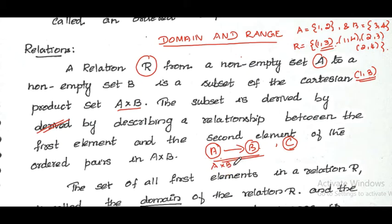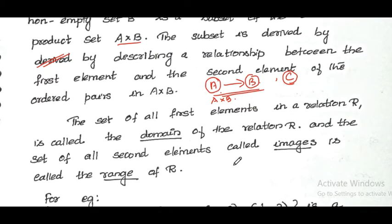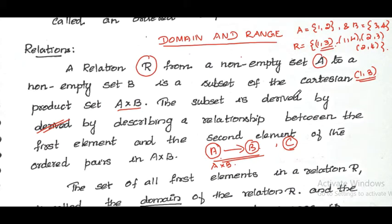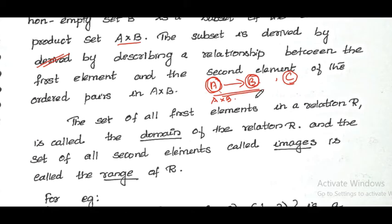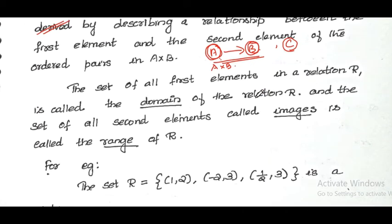The set of all first elements in a relation is called the domain. Considering A equal to {1,2} and B equal to {3,4}, the relation is {(1,3),(1,4),(2,3),(2,4)}. In this relation, the first elements 1 and 2 denote the domain. So remember: the set of all elements in set A denotes the domain, and the set of all elements in set B denotes the images. The set of all second elements is called the images, or otherwise it is called the range.